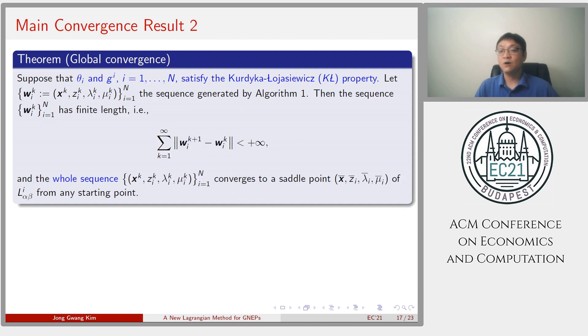The second main result is global convergence. Under an additional assumption that all objective and constraint functions satisfy the KL property, together with the sufficient decrease property and bounded sequence, I obtain the whole sequence generated by algorithm converges to a set-point of P-Lagrangian, which I also discuss in detail in the paper.